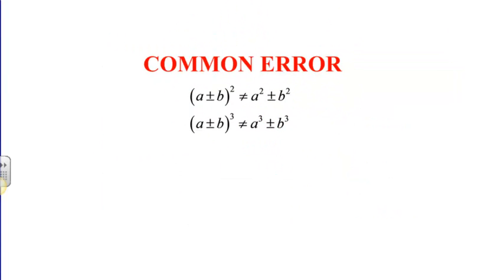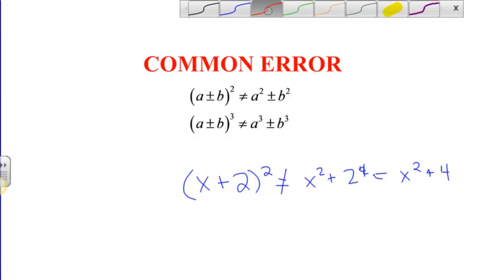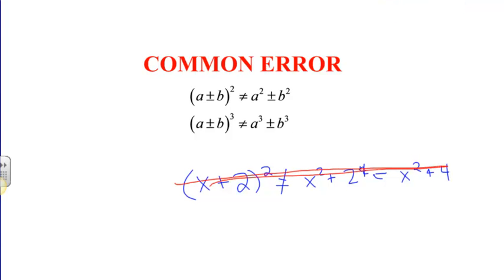And finally, one last thing. This is a common error. You cannot distribute exponents across addition and subtraction. Cannot. I repeat, cannot. Do not distribute exponents across addition or subtraction. If you do and you end up with something like this, this is going to be a big mistake. And I see it all the time. So make sure that when you see something like this, x plus 2 squared, do not write it as x squared plus 2 squared or x squared plus 4. It is not that. If I had a big red marker, I would draw a line through it. Do not do that.